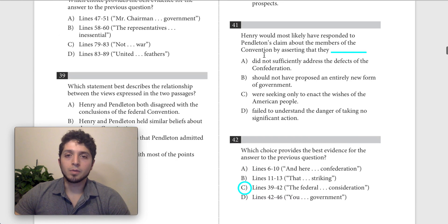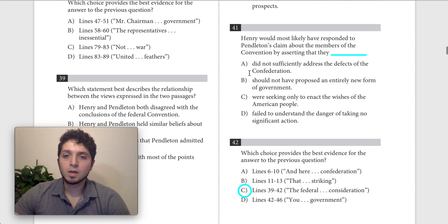Basically, he would respond to Pendleton's claim by saying that they did not sufficiently address the defects of the confederation. I don't think this is right. This would be if Henry is making the view that they didn't go far enough. They didn't do enough to fix the confederation. If anything, he thinks they went too far.